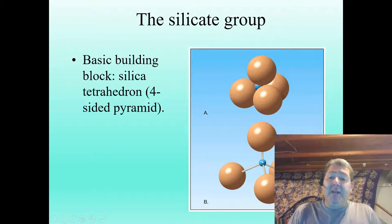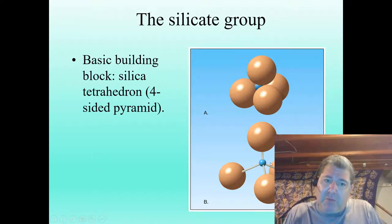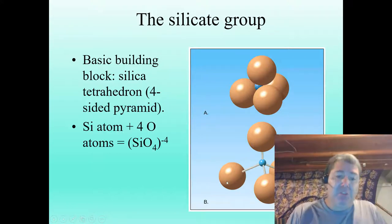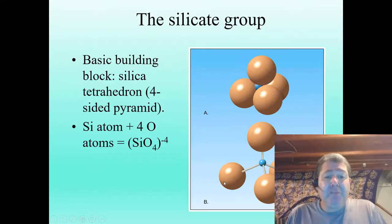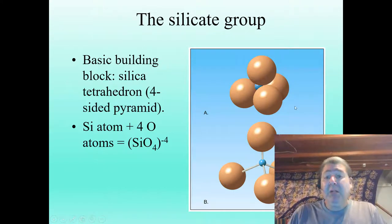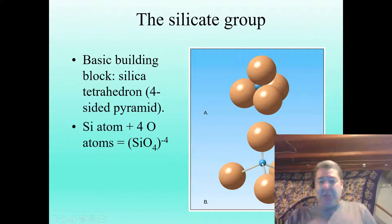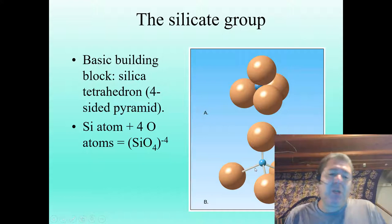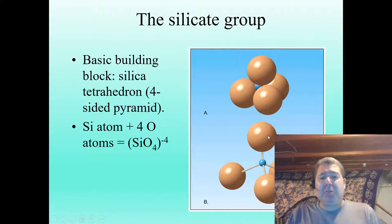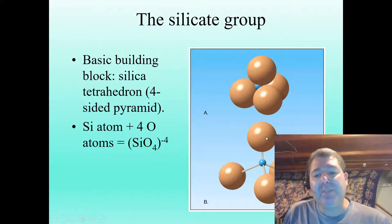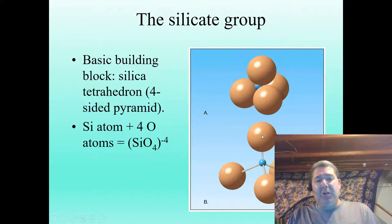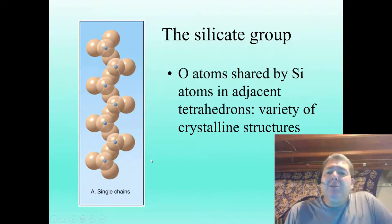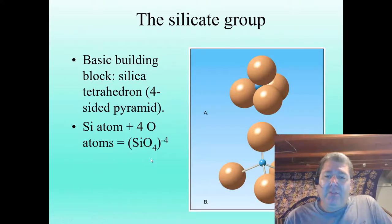The silica tetrahedron has one silicon atom in the middle, surrounded by four oxygen atoms — that's SiO4. These are shown in two different views, including an exploded view showing the bonds. The silicon-oxygen bonds are very strong bonds — these are between the cleavage planes, making them among the strongest bonds in mineral structures.